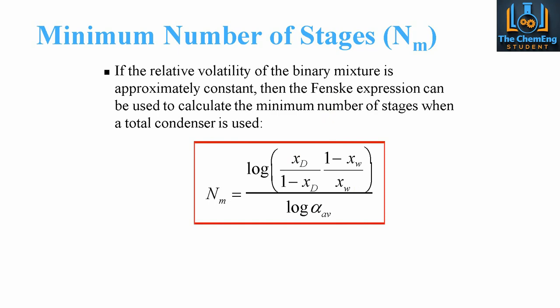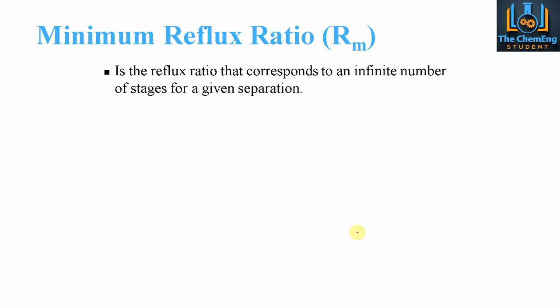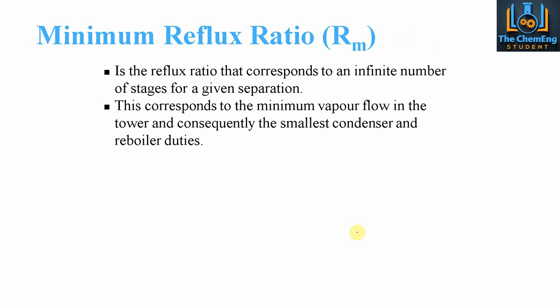The Fenske equation uses a log plot: the minimum number of stages equals the log of the compositions (xd and xb for top and bottom products) divided by the log of the average relative volatility. The average relative volatility accounts for small variations — alpha_d is the relative volatility of the overhead and alpha_b of the bottom product, and we multiply them together to the power of one half. The minimum reflux ratio corresponds to an infinite number of stages, giving the smallest condenser and reboiler duties — which is important when designing for utility requirements.